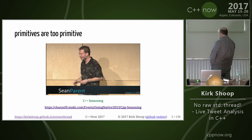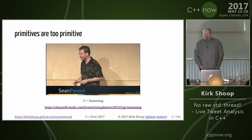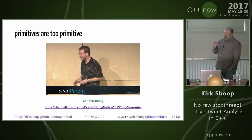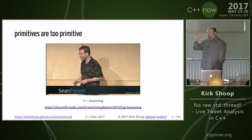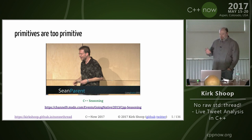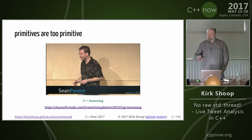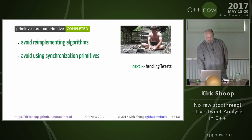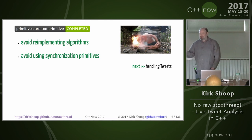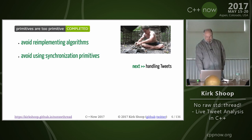Sean Parent gave a talk in 2013, 'C++ Seasoning', where he spent a good portion of the time talking about the goal of removing all the for loops in your code and replacing them with calls to algorithms. At the end he also mentioned another goal: to not use async primitives. So even back then that conversation had started. The goal here is to avoid re-implementing concurrent algorithms — just like we should avoid re-implementing the existing standard algorithms — and to avoid using synchronization primitives.